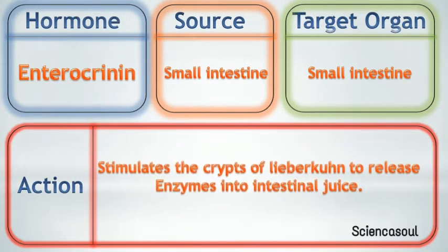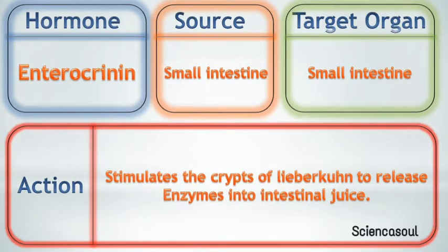Sixth hormone is enterocrinin. Source of enterocrinin is the small intestine. Target organ of enterocrinin is also the small intestine. Action of enterocrinin is to stimulate the crypts of Lieberkühn to release enzymes into the intestinal juice.